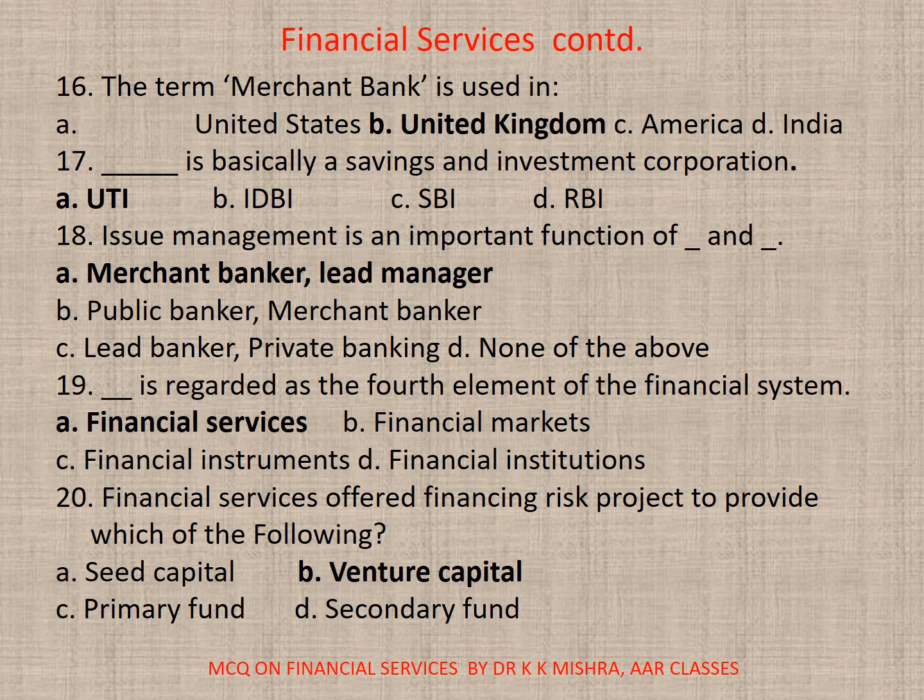Question 17. This is basically a savings and investment corporation. A. UTI. B. IDBI. C. SBI. D. RBI. Correct option is A. UTI.